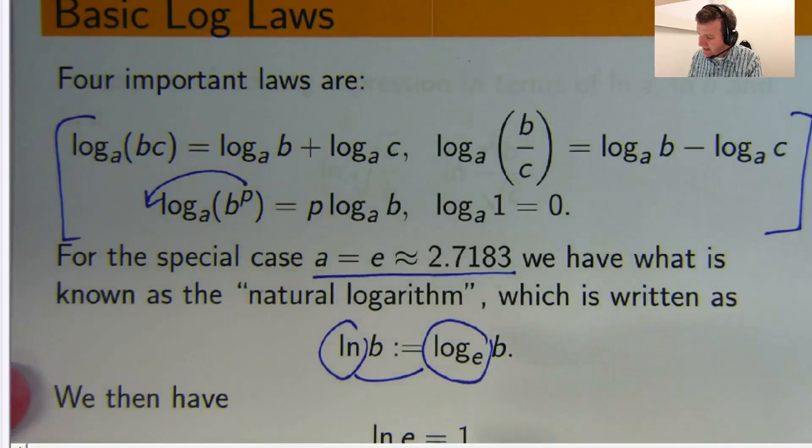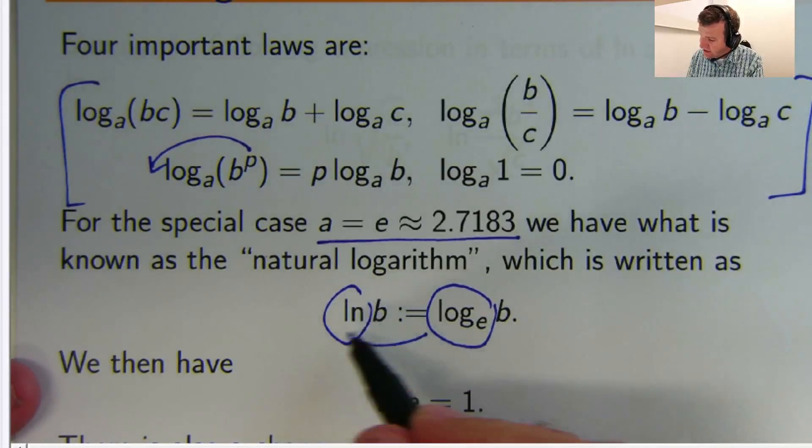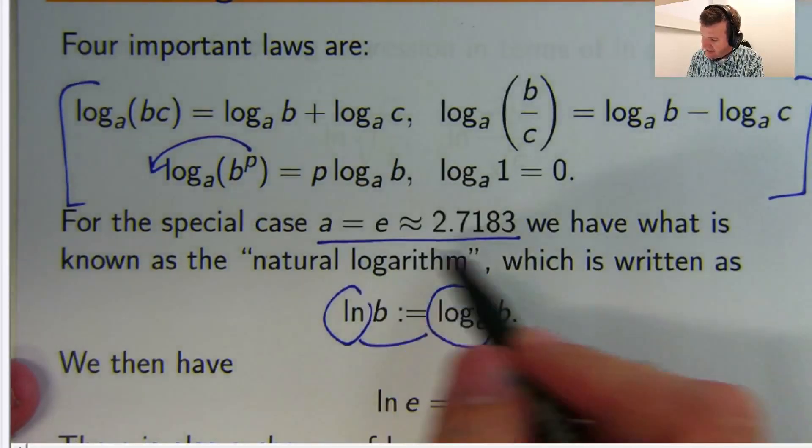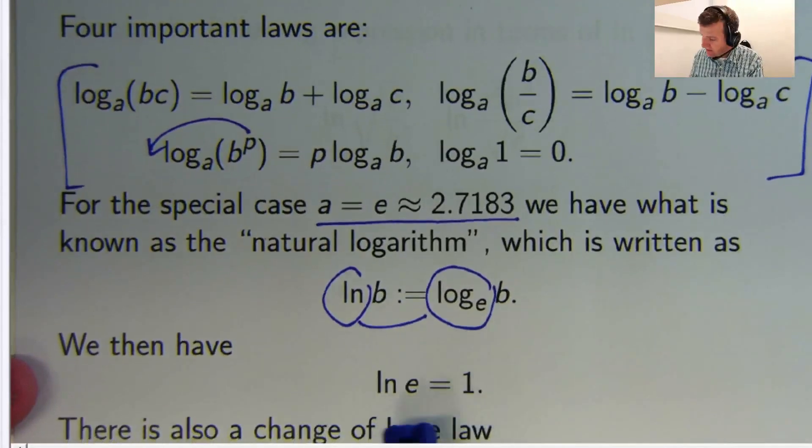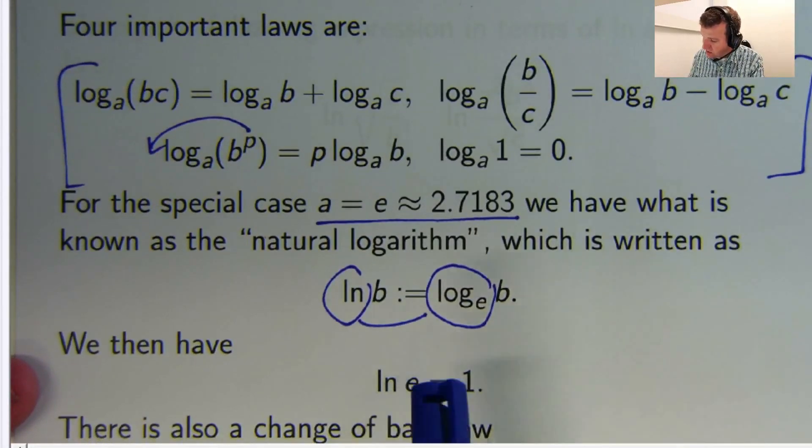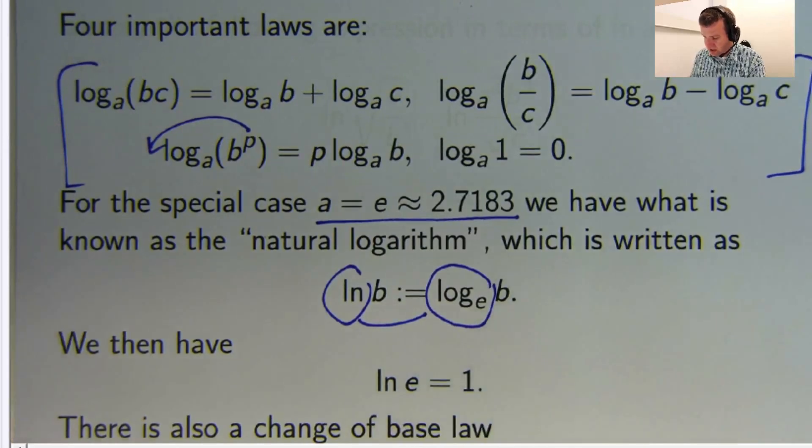All right? So, in that case, whenever we use the ln notation, you have this special base e. It's just known to do that. So, you have the natural log of e is just 1 because that's just the log of e to base e.